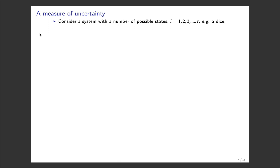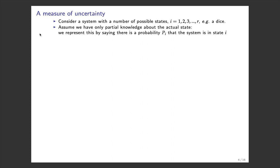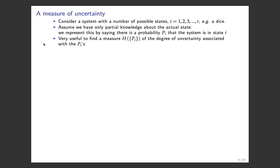Let's consider a simple example like a dice — a system with a number of possible states. We'll label states by i, running from 1, 2, 3 up to some r. A standard dice has six faces, but we'll just assume r states. Now assume we only have partial knowledge about the actual state. We represent this by saying there is a probability p_i that the system is in state i. It's very useful to find a measure of the degree of uncertainty associated with these probabilities — we'll call this H. H depends in principle upon all the probabilities, and we want to quantitatively define the uncertainty.